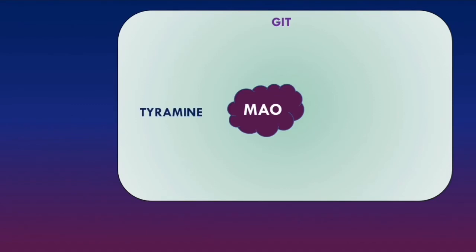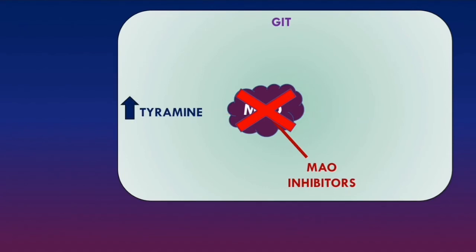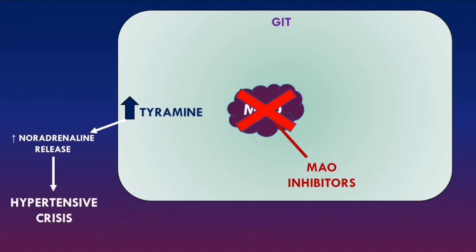However, if a patient is on a monoamine oxidase inhibitor, these drugs will inhibit the GIT monoamine oxidase enzymes, so tyramine will not be broken down, tyramine levels will increase, and more will be absorbed through the GIT. The problem is that tyramine increases noradrenaline release, causing peripheral vasoconstriction and increasing blood pressure. This creates a high risk of a hypertensive crisis — a major side effect of MAOIs when a patient eats tyramine-rich foods.